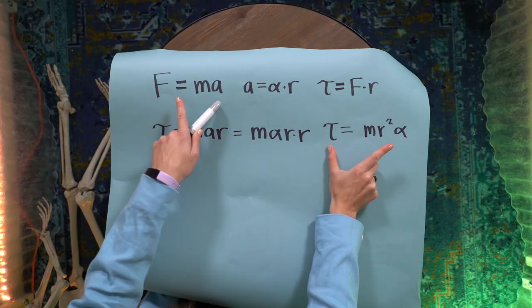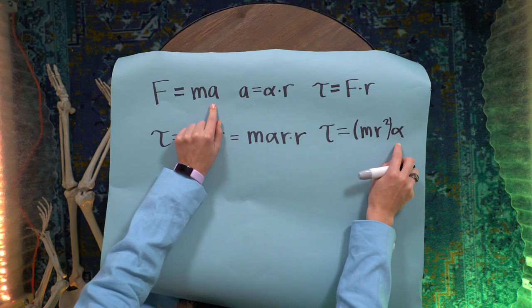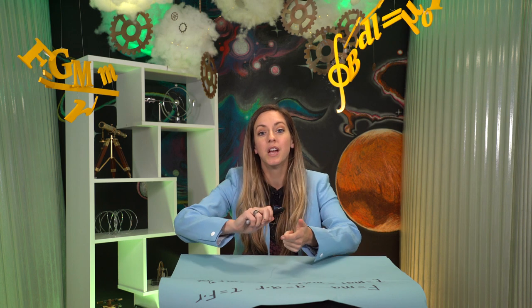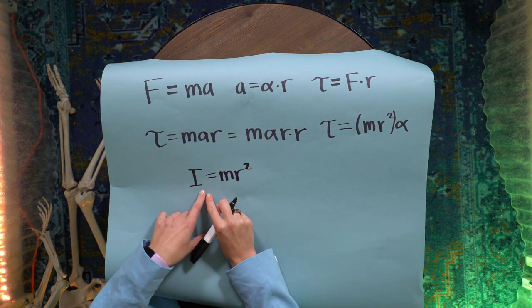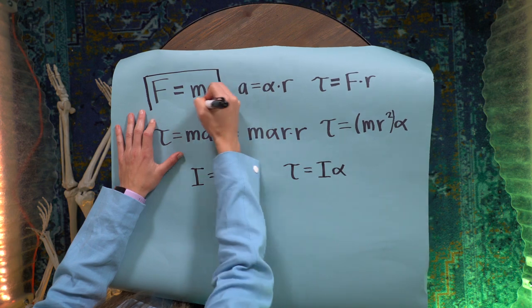So this looks a lot like F equals ma, especially if I put parentheses around this part. And it is. This is the rotational F equals ma. Force, torque, acceleration, angular acceleration. But this part here, well, we had mass and F equals ma. And so over here, we've got m r squared. What is that? That is the moment of inertia. Yeah, I said it, because that's what it's called. And remember, mass tells us how much force we need to apply to accelerate something linearly. So similarly, moment of inertia tells us how much torque we need to apply to get something to spin, to get something to accelerate angularly. And we're going to give it a new label. We're going to call this I for moment of inertia. So I is that m r squared in this case. And then check it out. Torque equals I alpha. Now we've got F equals ma and tau equals I alpha.